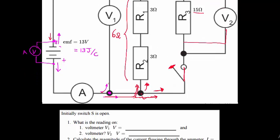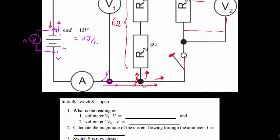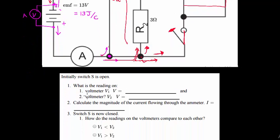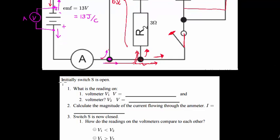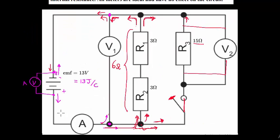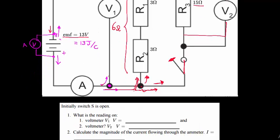That helps a lot to answer the questions. First: what is the reading on voltmeter V1 when the switch is open? With the switch open, we have a simple series circuit. V1 is the voltmeter over the battery, so its reading equals the EMF — 13 volts.